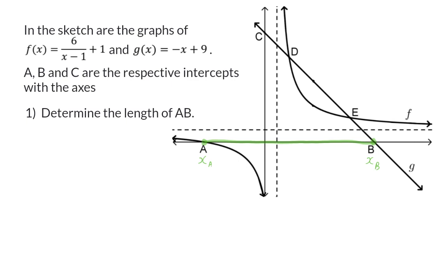Firstly, to determine the x-intercept of the hyperbola, I am going to change the y value in the equation to 0 and solve for x. This means that the x value of A will be minus 5.